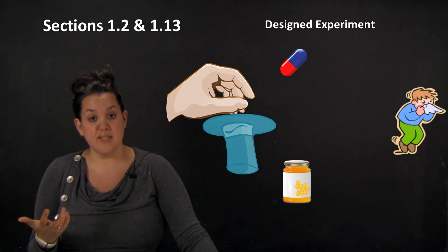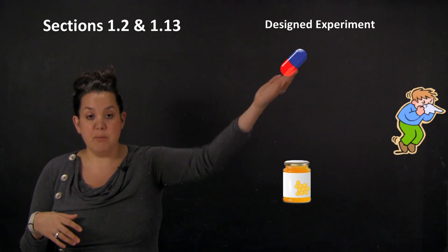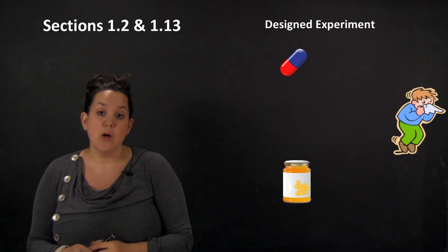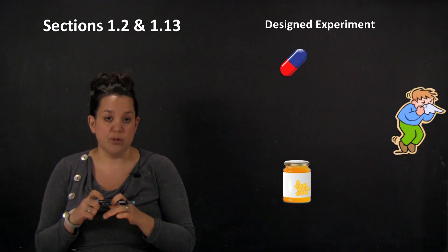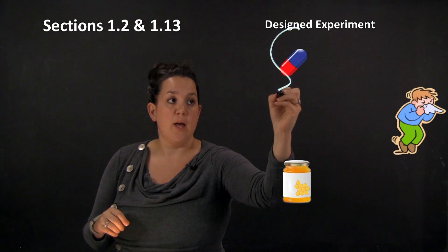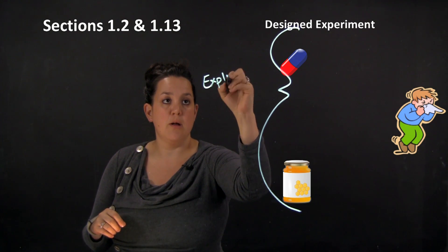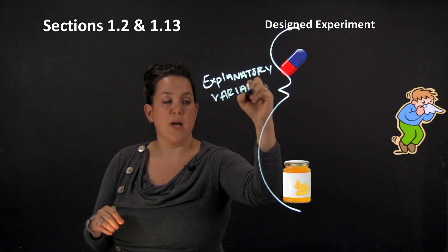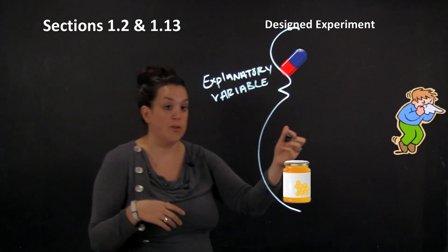In this designed experiment, we want to think about how either taking a pill or consuming honey would affect whether or not you have allergies. There are a lot of different variables and vocabulary words involved. The first one is what's called an explanatory variable.